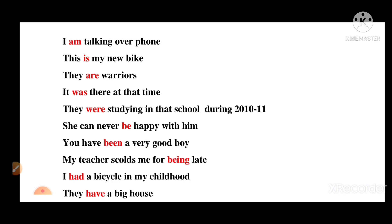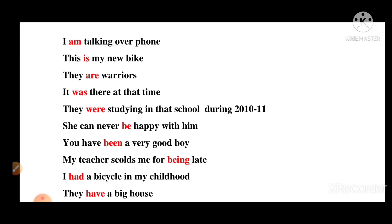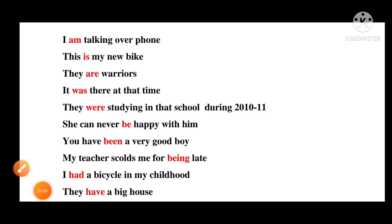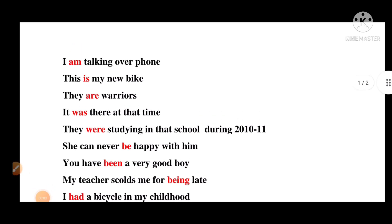This is my new bike — Is this my new bike? They are various — Are they various? It was there at that time — Was it there at that time? They were studying in that school during 2010-11 — Were they studying in that school? Thus we can convert a sentence into a question by moving the auxiliary verb to the front. But questions that start with auxiliary verbs are yes or no questions only — they are not informative questions. We just answer yes or no to those questions which start with auxiliary verbs.